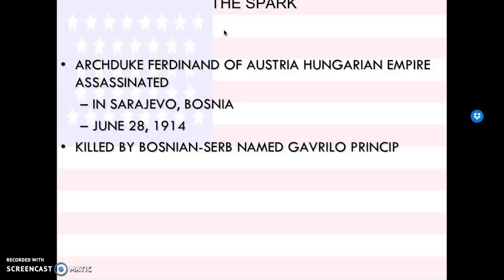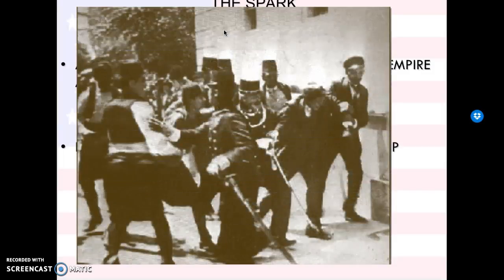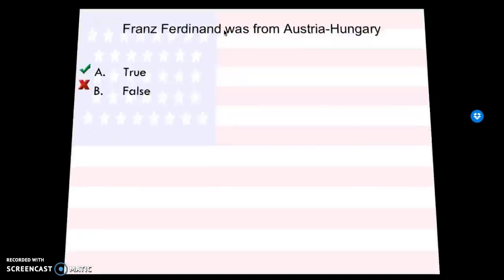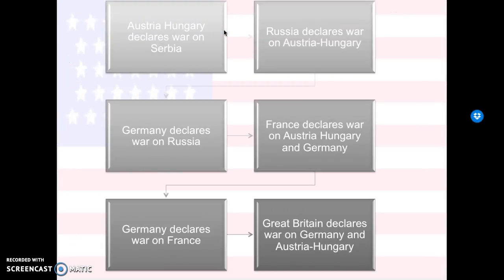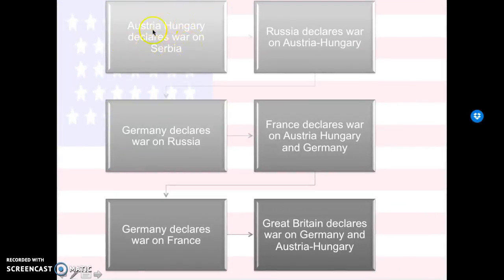That guy's name is Gavrilo Princip. Gavrilo was part of a terrorist group, and they were basically trying to get rid of Austria-Hungary's influence out of Bosnia and Serbia. So he assassinated Franz Ferdinand — and there's Franz Ferdinand right there. That's going to make Austria-Hungary very upset, so they are going to declare war. Austria-Hungary declares war on Serbia, which causes a domino effect.